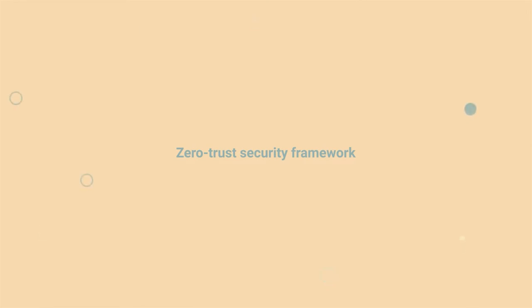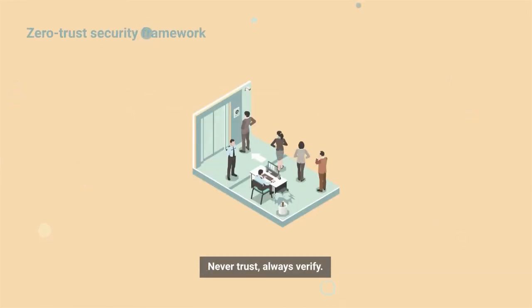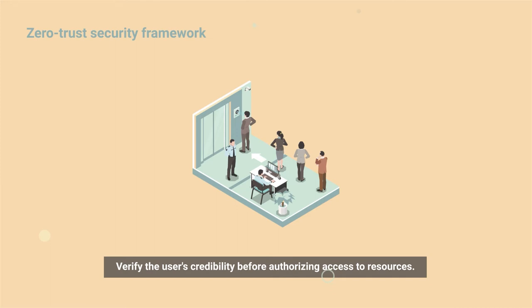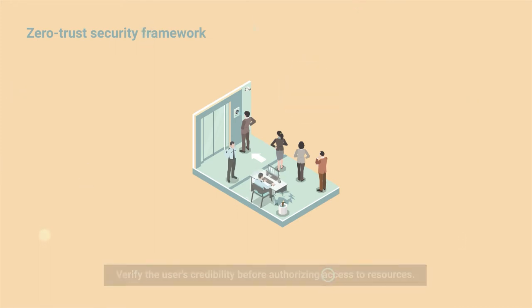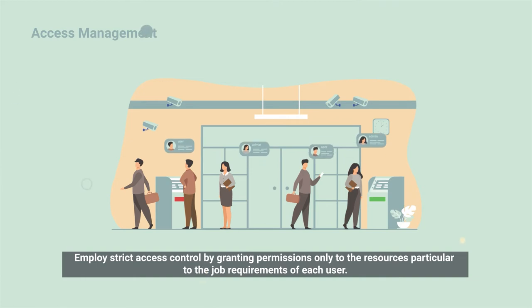Zero Trust Security Framework — never trust, always verify. Verify the user's credibility before authorizing access to resources. Access Management: employ strict access control by granting permissions only to the resources particular to the job requirements of each user.